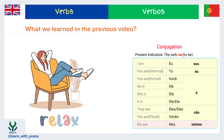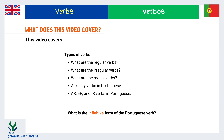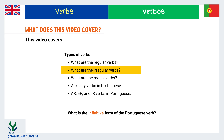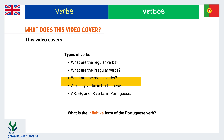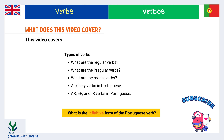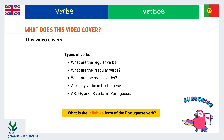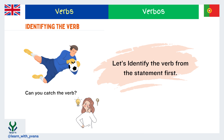If you haven't watched that video, I recommend that you watch that video first — the link is in the description. In this video we will discuss the types of verbs and their infinitive forms in detail. This video covers regular verbs, irregular verbs, modal verbs, auxiliary verbs, and AR, ER, and IR verbs in Portuguese, plus what the infinitive form is and how it helps us learn Portuguese faster. Let's start — vamos começar! Let's identify the verb from the statement first.